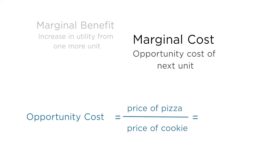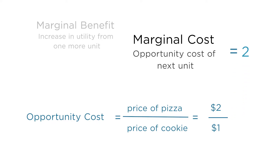As in the last lecture, let's say that a slice of pizza costs $2 and a cookie costs $1. So the price ratio of pizza to cookies is 2 divided by 1, or 2. This is the marginal cost of pizza.